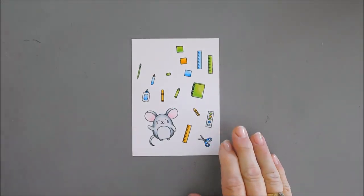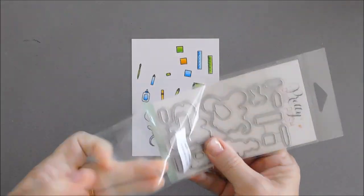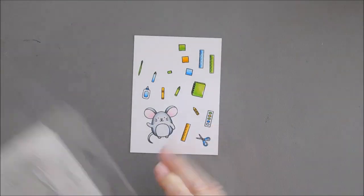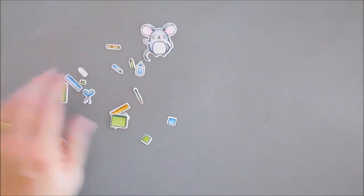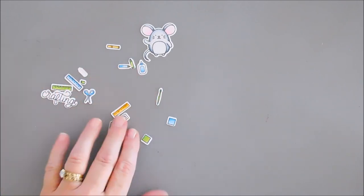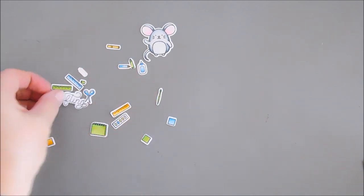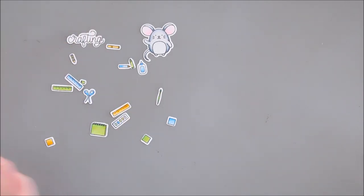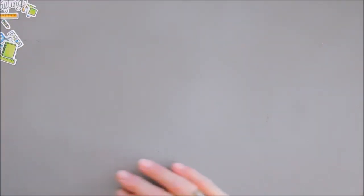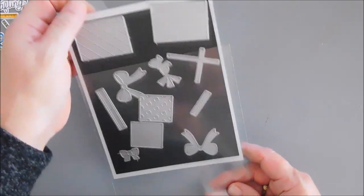I'm going to go ahead and separate the coordinating dies, and then I'm going to die cut out all of my images. After all of my images are die cut, I did stamp and die cut out the word crafting, and we're going to do a little bit more die cutting. So I'm going to put these off to the side, and we're going to bring in our Build-A-Gift die set.